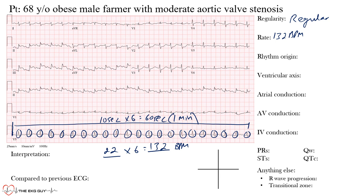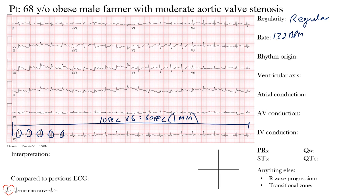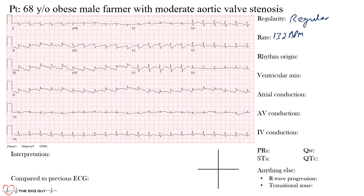It's easy to rely on the machine, but as someone who looks at EKGs regularly you'll often see the machine is not always correct. It typically only gives you the ventricular rate — the atrial rate is hard for the system to pick up since P waves can be difficult to detect. Because we have a regular rhythm, we can also use another method.